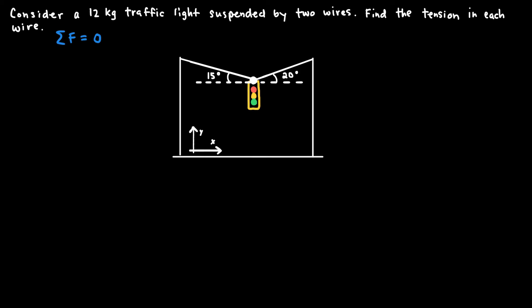Here I have a 12 kilogram traffic light suspended by two wires — a classic example of an equilibrium problem. We'll use the fact that the net force in both the X and Y directions is zero to find the tensions in each wire. The two wires make different angles with the horizontal: the wire on the left is at 15 degrees and the wire on the right is at 20 degrees above horizontal. Positive X is to the right and positive Y is upward.